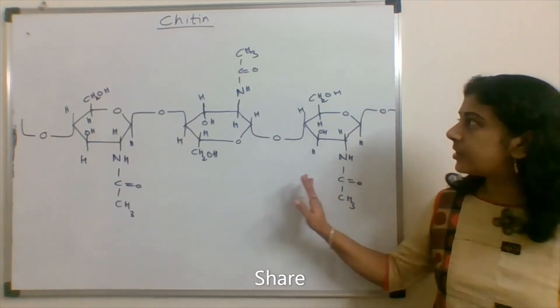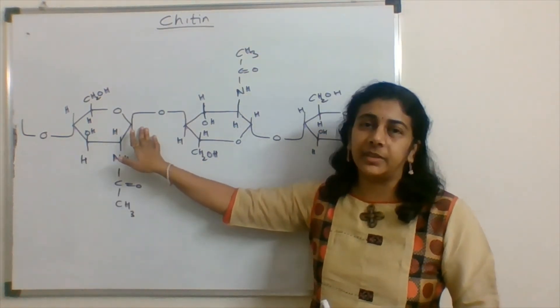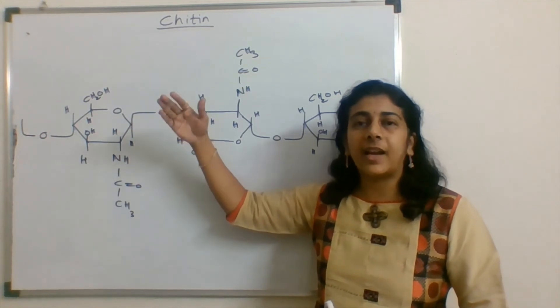So this is the structure of chitin. Here, as we know that, at the first carbon, when hydroxyl group is at the upper side,